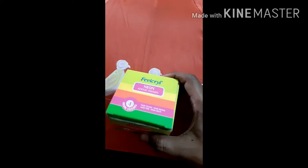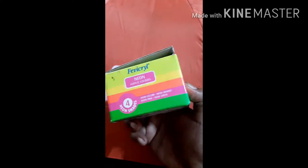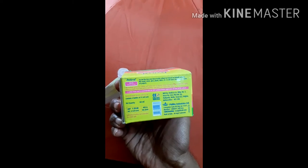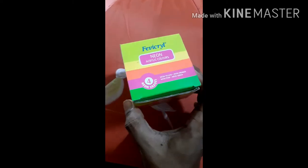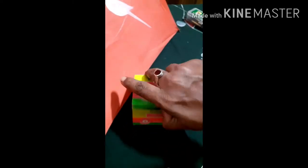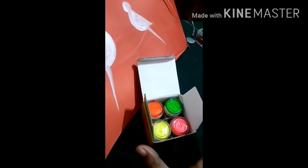Now I am going to use neon color. This neon color is easily available in any book shop. The cost is 99 rupees. In this set you can see 4 neon colors - neon orange, neon green, neon yellow, neon pink.